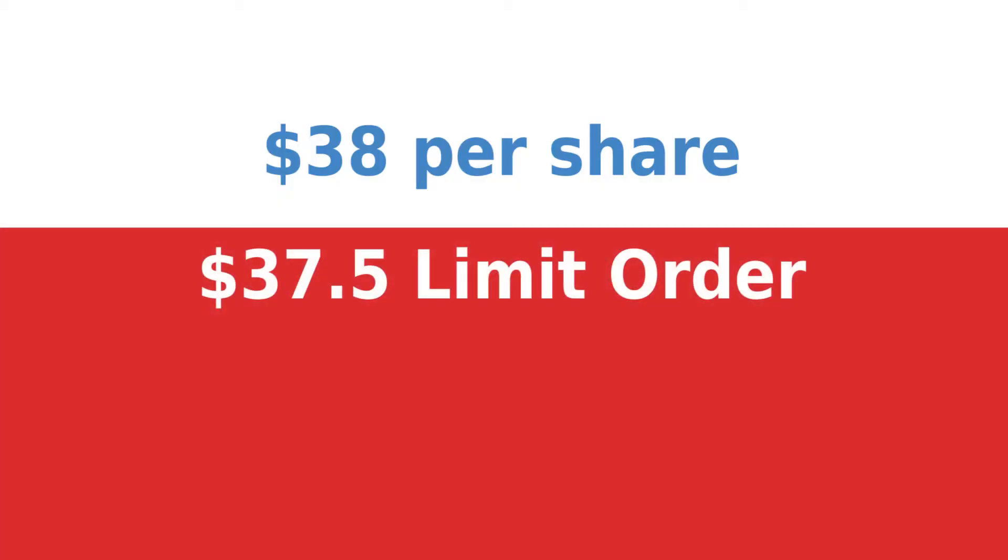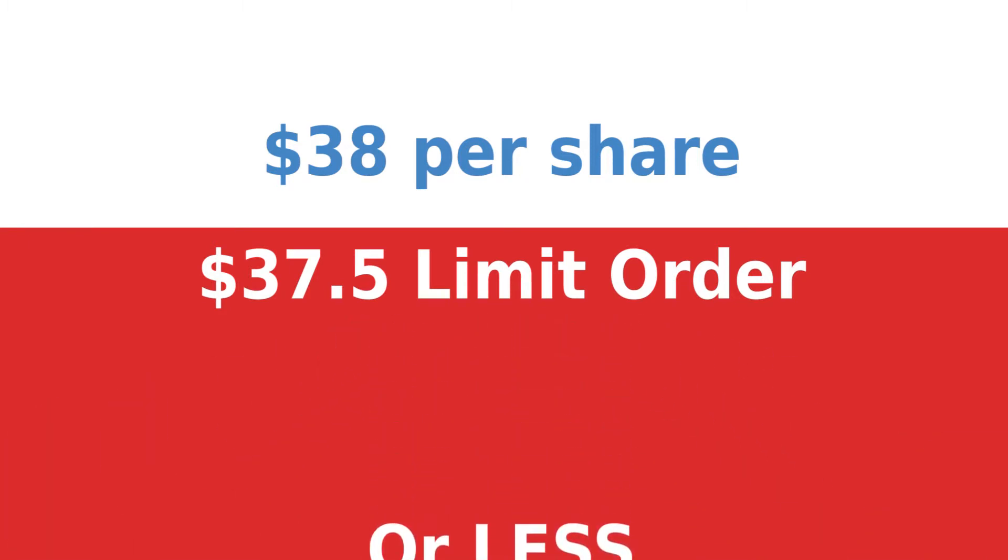Imagine you want to buy 400 shares of a stock. The current price is $38 per share. You do not want to pay more than $37.50, so you place a limit order set to execute at $37.50 or less. If the stock price falls to that price, your order should be executed.